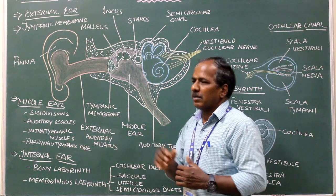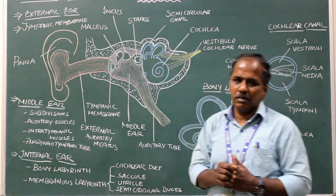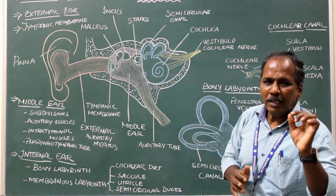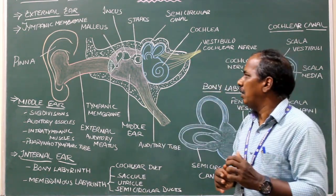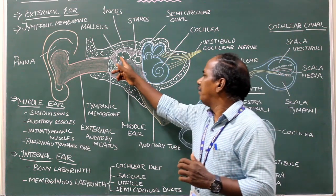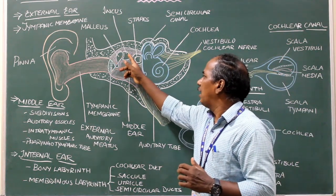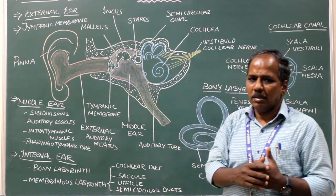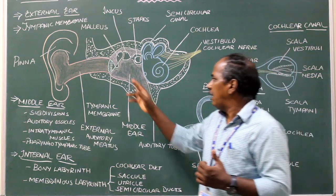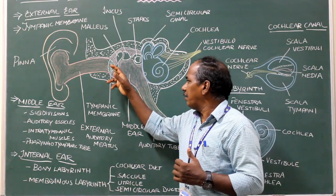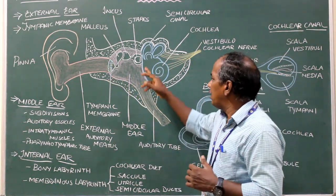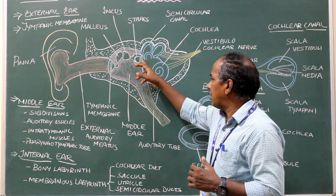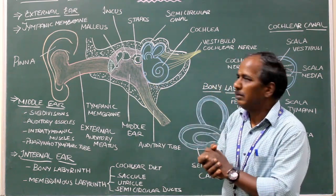Auditory ossicles. There are three ear ossicles: malleus, incus, and stapes. The malleus is attached to the tympanic membrane, whereas the stapes is attached to the internal ear.